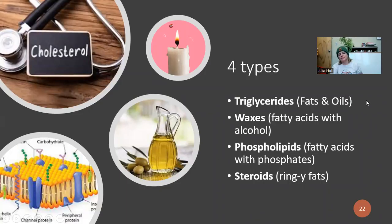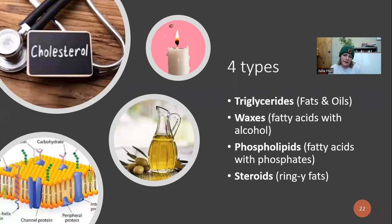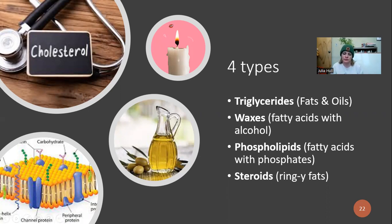The four major types of lipids are: triglycerides, better known as fats and oils; waxes, which are fatty acids with an alcohol functional group attached; phospholipids, which are fatty acids with a phosphate group; and steroids, which are kind of a ring structure — ringed lipids.